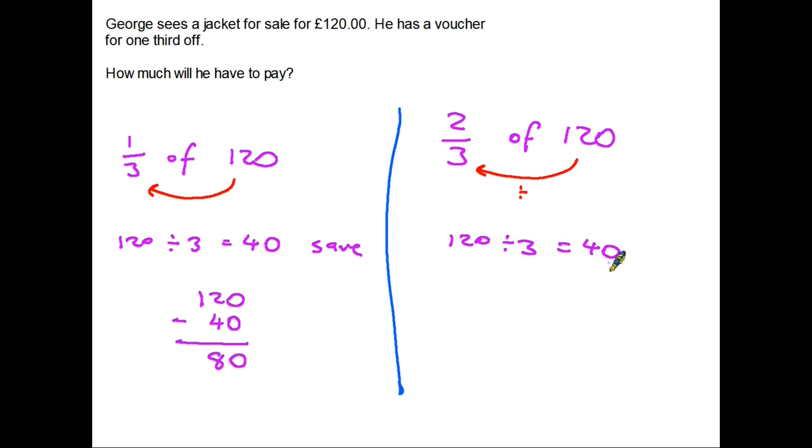But he's not paying one-third, he's paying two-thirds. So let's follow the second part of the two-step rule and we are going to multiply that by two, and 40 times two equals 80. So to summarise we can either find out what one-third is, which is what it says on his voucher, and we can take that one-third away from the total amount, or if he's going to save one-third that means he's going to have to pay the other two-thirds. So we can find two-thirds of 120, and of course the answer is the same.